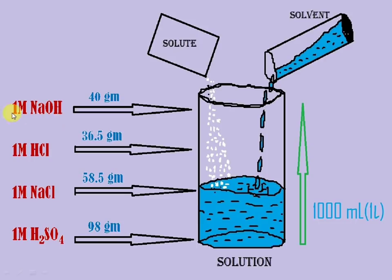We have to dissolve sufficient amount, means 40 grams of NaOH (it is the molecular weight of NaOH), in some amount of solvent and make a volume of 1000 ml. Similarly for sodium chloride.